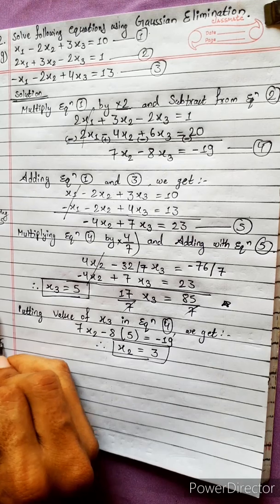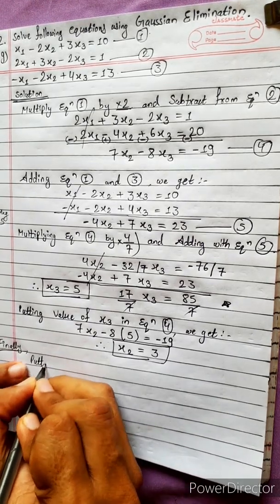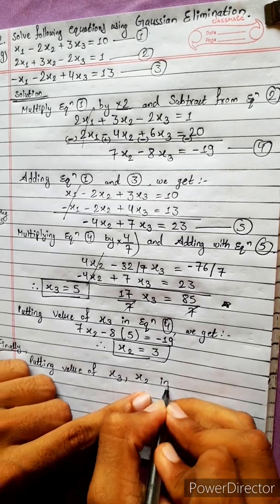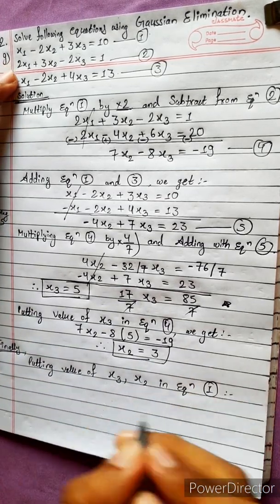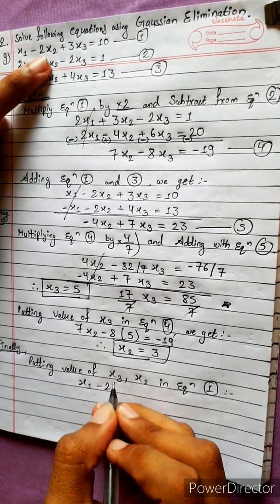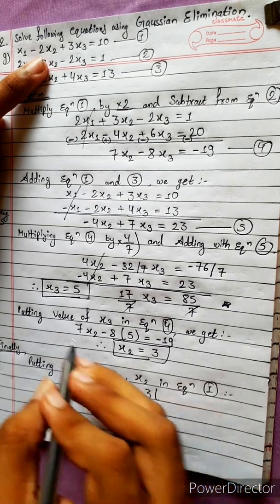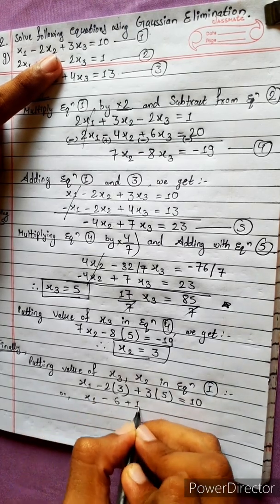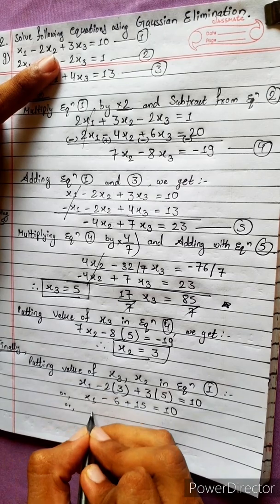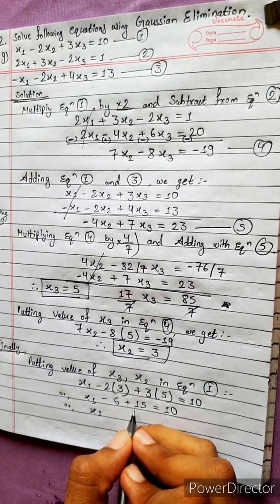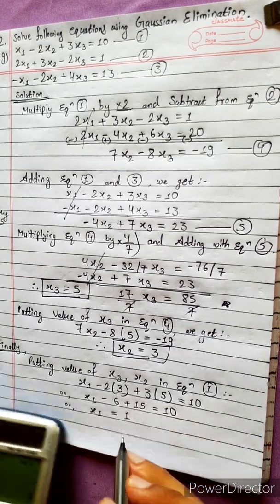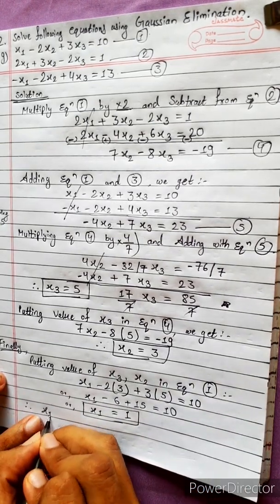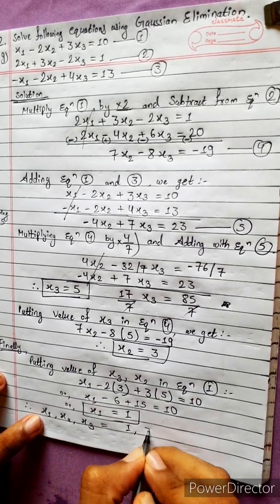Finally, putting the values of x3 = 5 and x2 = 3 into equation 1: x1 - 2×3 + 3×5 = 10, so x1 - 6 + 15 = 10, giving x1 + 9 = 10, therefore x1 = 1. We got all values: x1 = 1, x2 = 3, x3 = 5. That is the right answer.